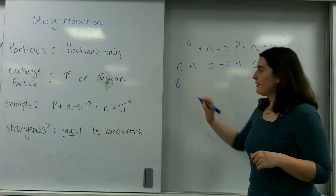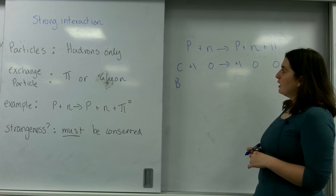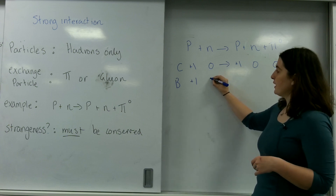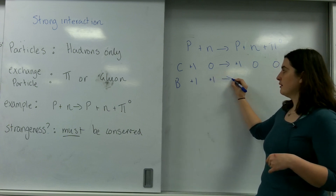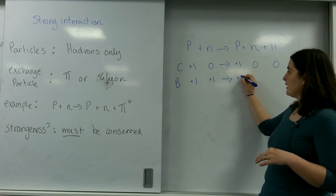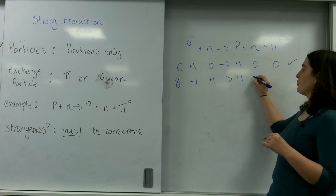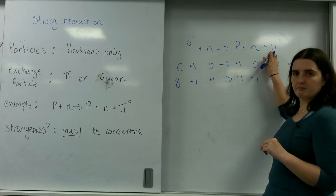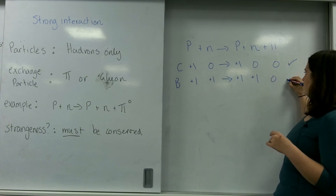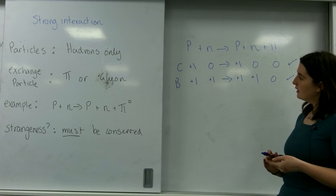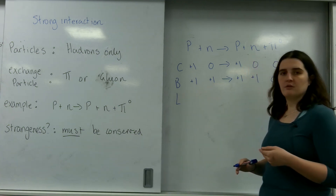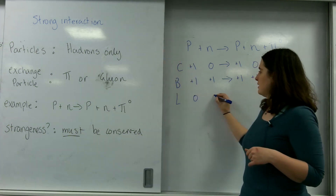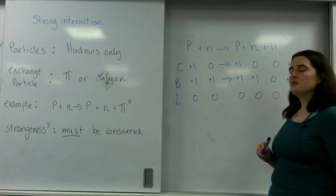Now I'm going to look at the baryon number. A proton has plus one baryon number, and a neutron has plus one baryon number. On the right: a proton also has plus one, and a neutron also has plus one baryon number. The pion is a meson — it doesn't have a baryon number. So this is conserved. Looking at leptons: none of them are leptons because it is a strong interaction, so this is all zero.